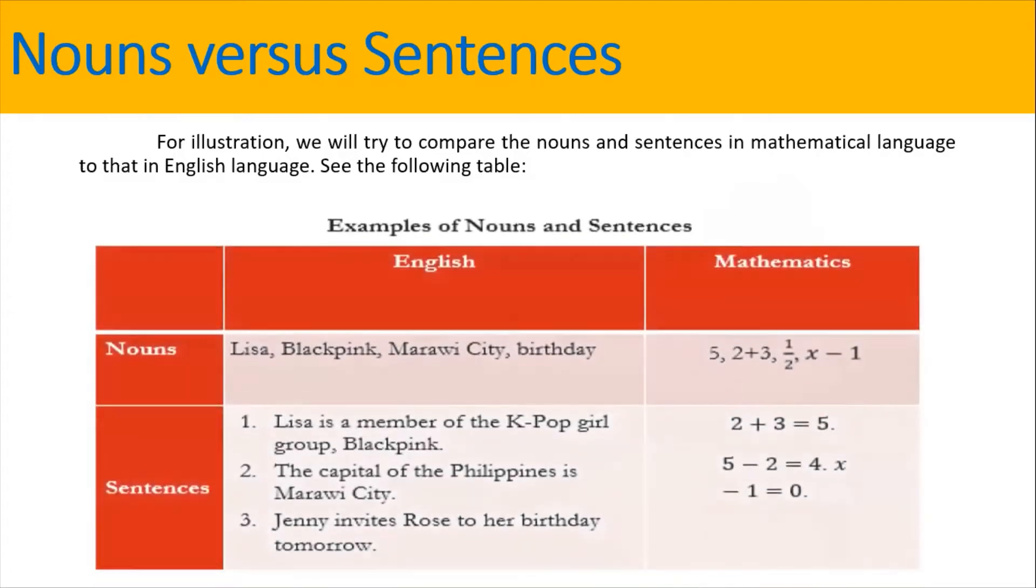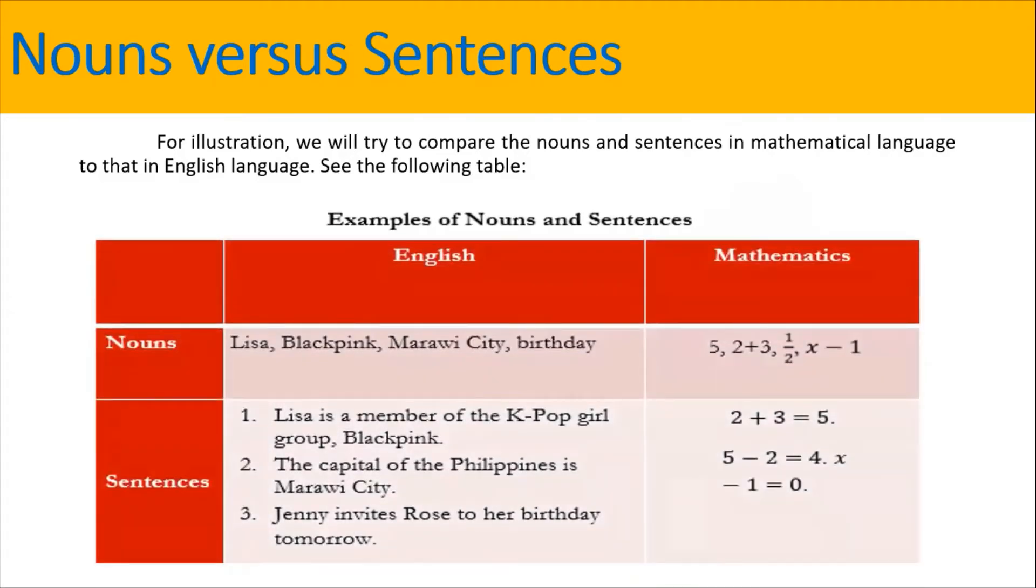See the following table. So, we have the examples of nouns and sentences. For the English, we have the nouns: Lisa, Blackpink, Marawi City, and Birthday. And then we also have nouns for mathematics, which are the following. We have 5, 3/3, 1 half, x minus 1. Now, for the sentences.